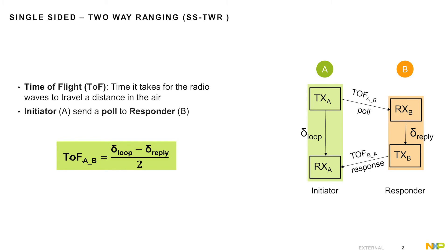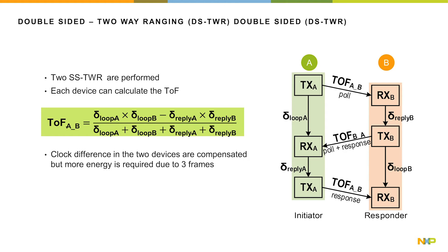Single-sided two-way ranging is a simple technique, but any clock reference difference between the initiator and the responder can lead to time of flight calculation errors. To avoid this, double-sided two-way ranging is used.